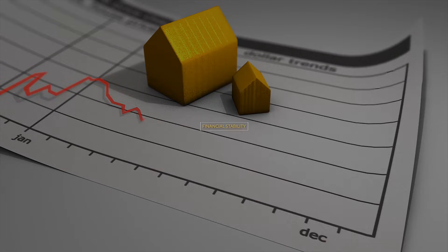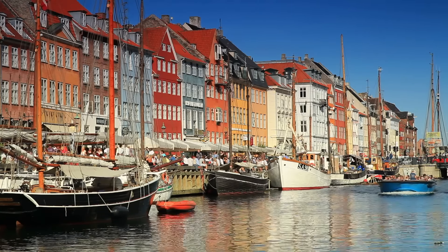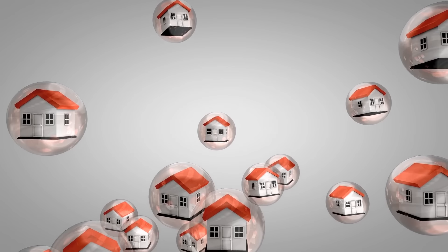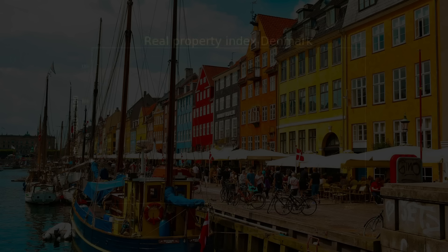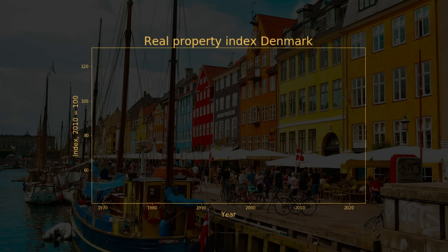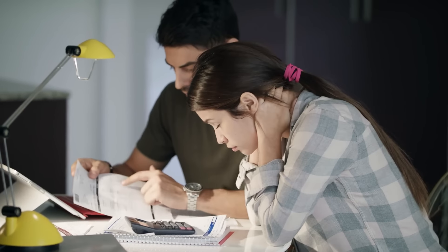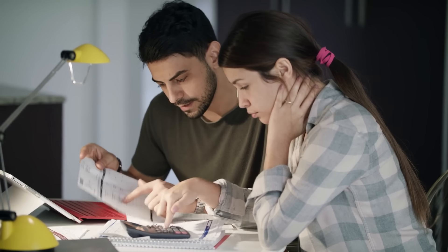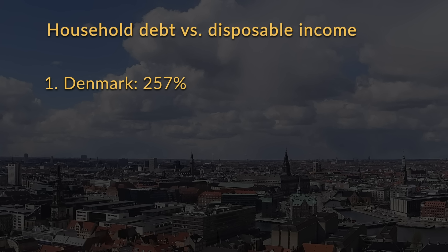Part of the answer is that some prices have actually climbed quite rapidly in Denmark — it just hasn't been consumer prices, and therefore has not been registered as inflation. House prices have been notoriously bubbly in Denmark. As you can see in this chart of property prices, they were pushed up to sky-high levels, and after a little crisis dip, they are almost back to their previous highs. Danish household debt is one of the highest in the world at around a whopping 257% of total household disposable income.